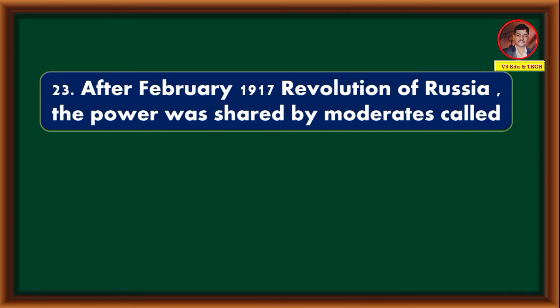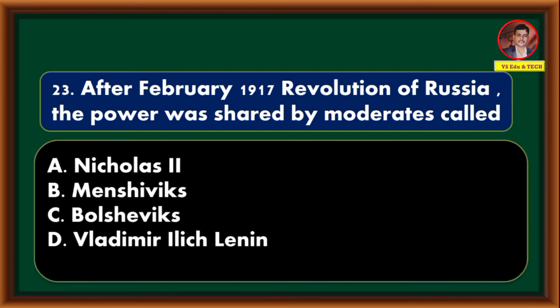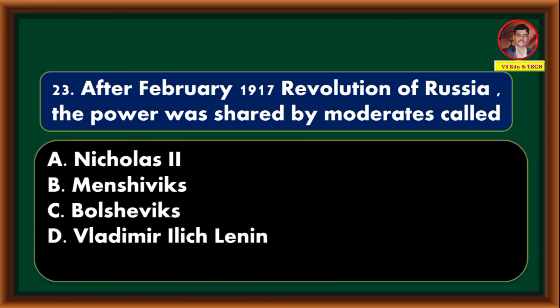After the February 1917 Revolution of Russia, the power was shared by moderates called — Nicholas 2nd, Mensheviks, Bolsheviks, Vladimir Ilyich Lenin. Correct answer is option B: Mensheviks.